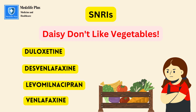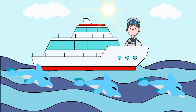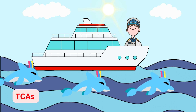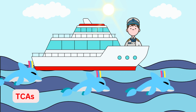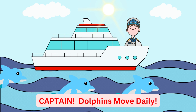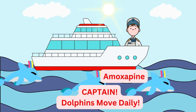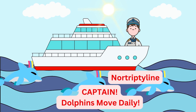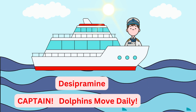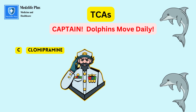Let's move to the next picture — it's very interesting. This picture helps us find the mnemonic for tricyclic antidepressants. You can see a cute captain and moving dolphins. Our mnemonic is: Captain Dolphins Move Daily. The word CAPTAIN includes seven drugs: C for clomipramine, A for amitriptyline, P for protriptyline, T for trimipramine, A for amoxapine, I for imipramine, N for nortriptyline. Dolphins Move Daily gives us: D for desipramine, M for maprotiline, D for doxepin.